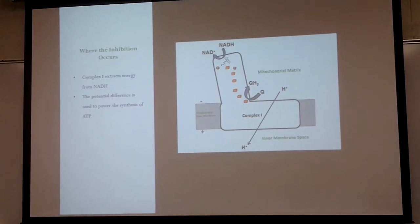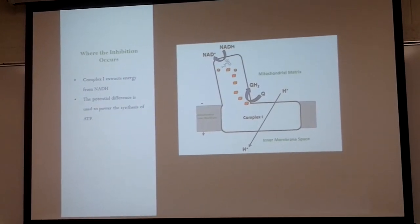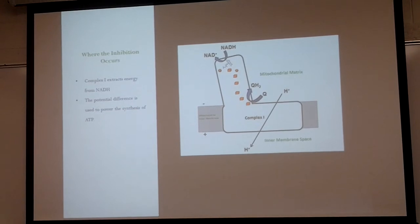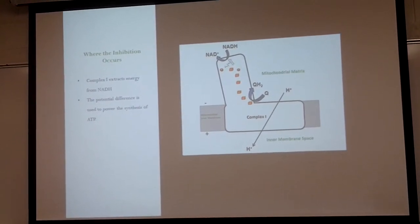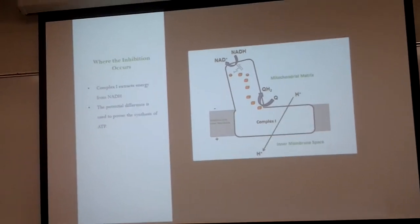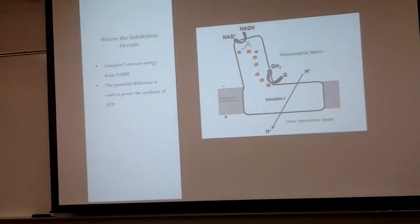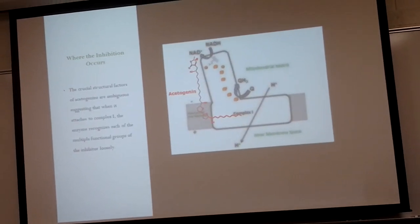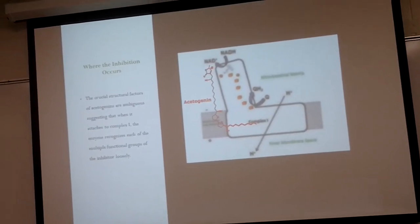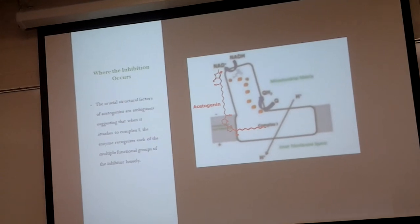Complex I extracts energy from NADH. The potential difference is used to power the synthesis of ATP. It traps the energy in a potential difference or voltage across the mitochondrial inner membrane. The potential difference powers ATP synthesis or the production of energy.